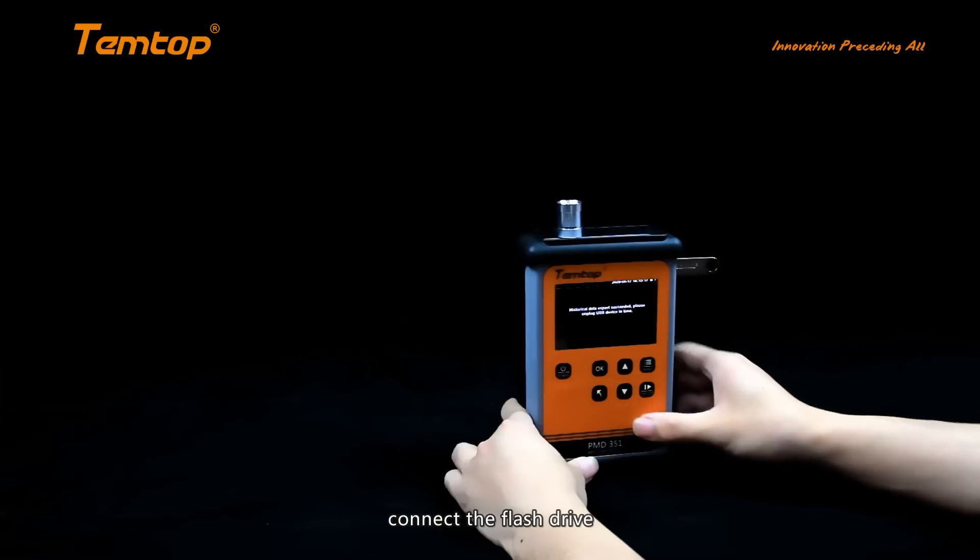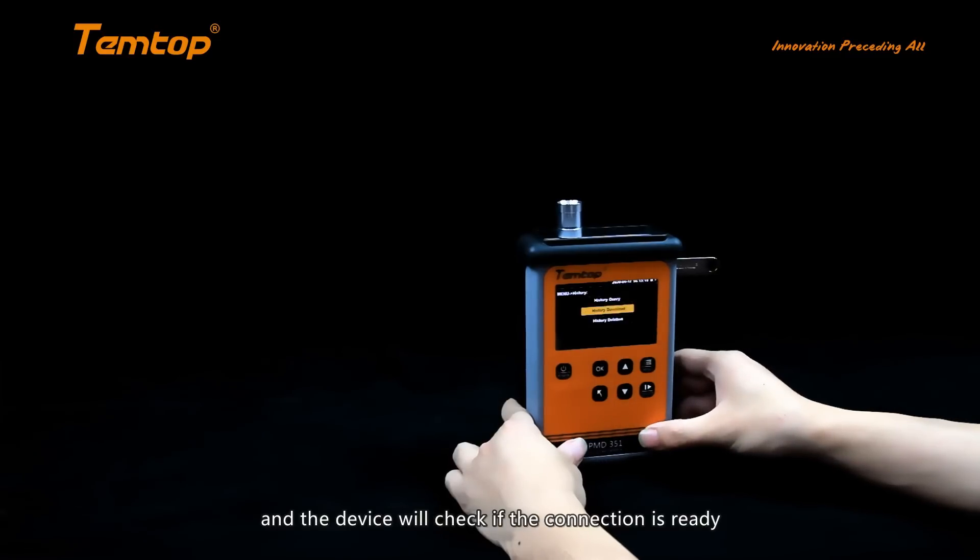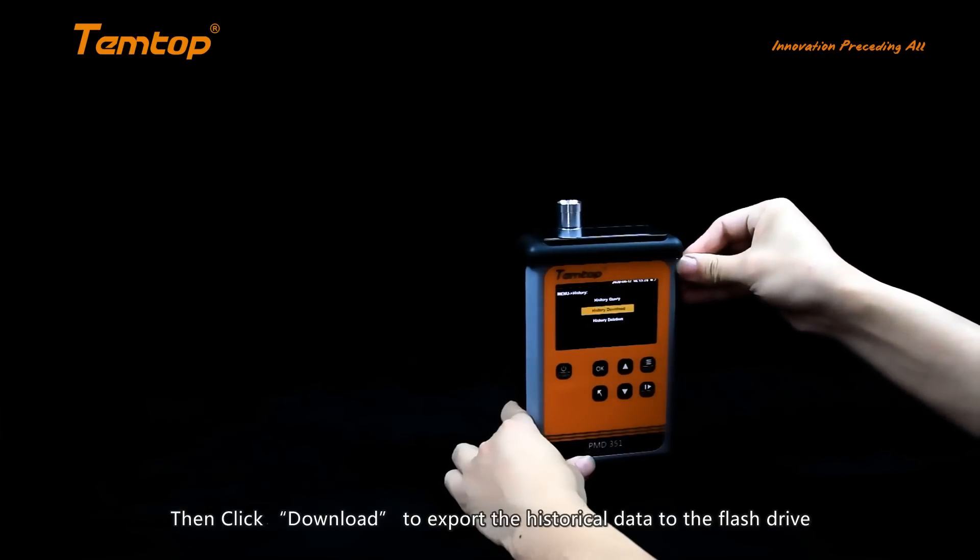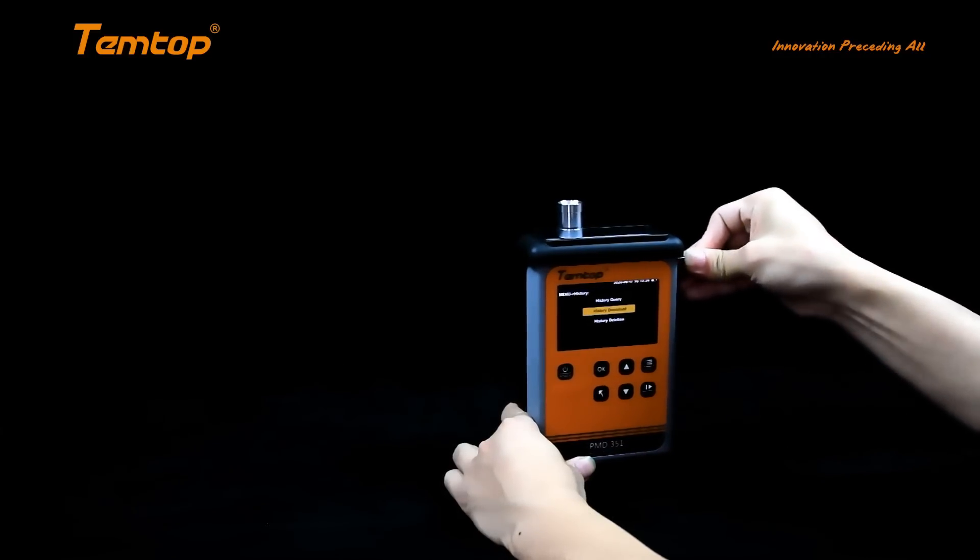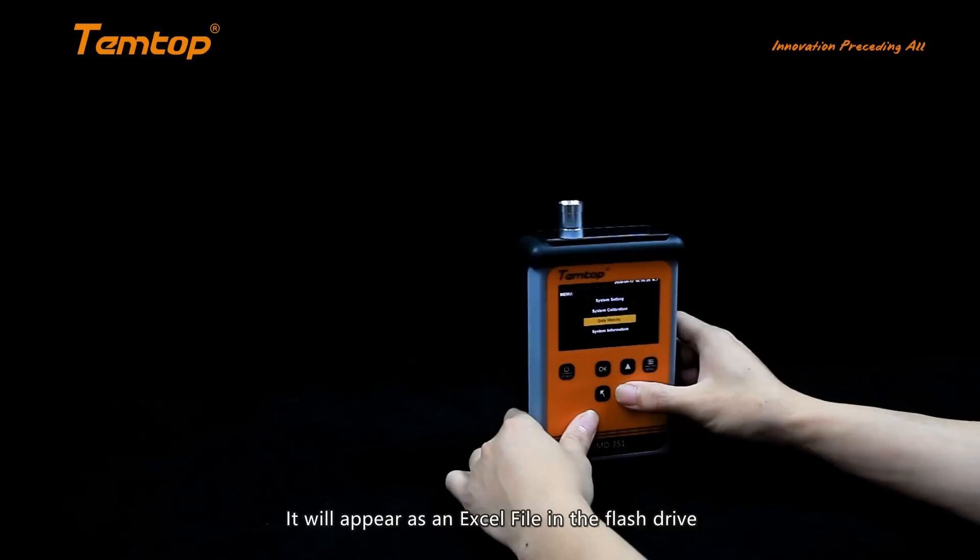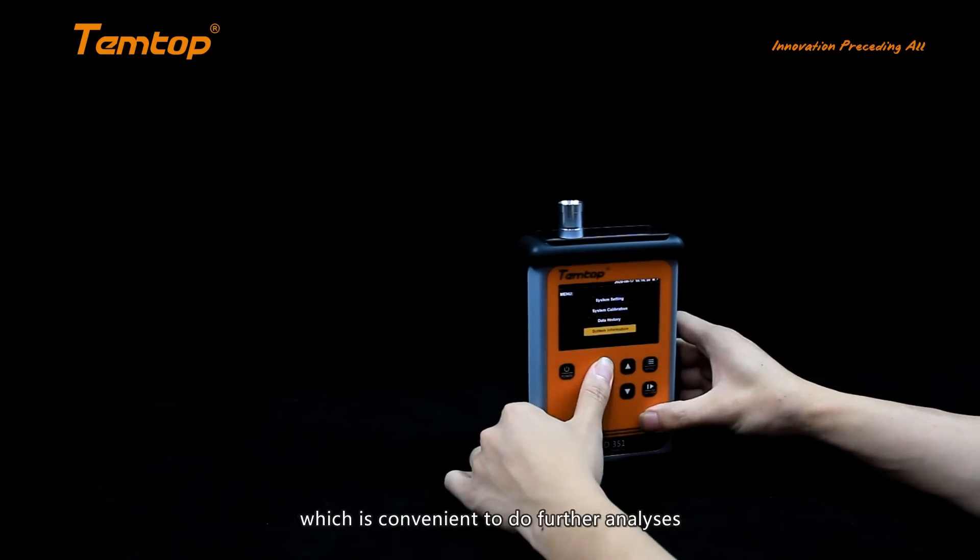It will appear as an Excel file in the flash drive, which is convenient to do further analyses. You have the ability to delete the data by month or the complete list.